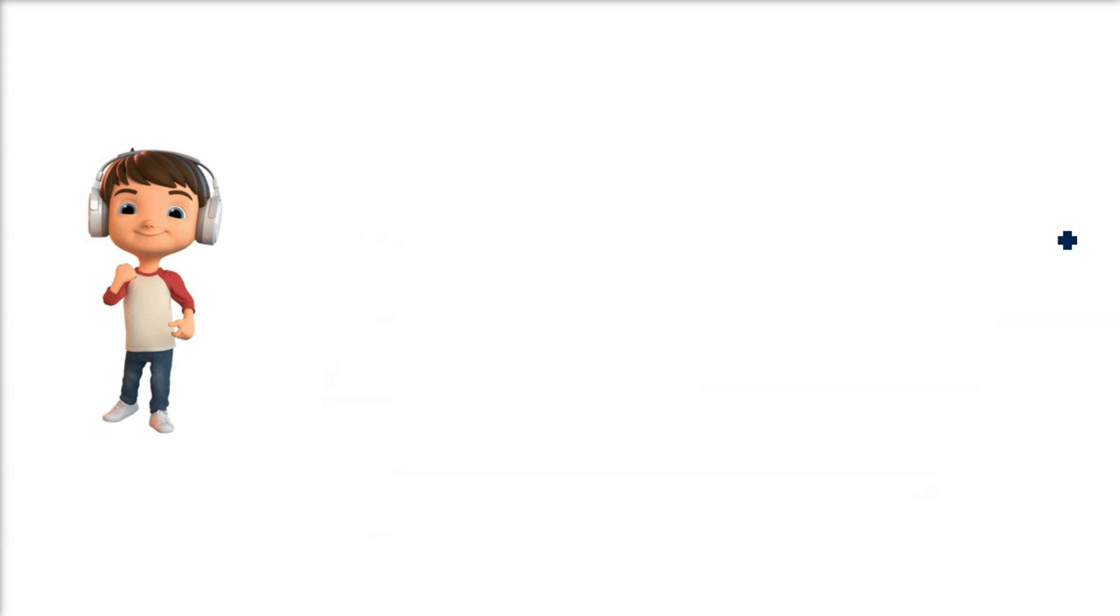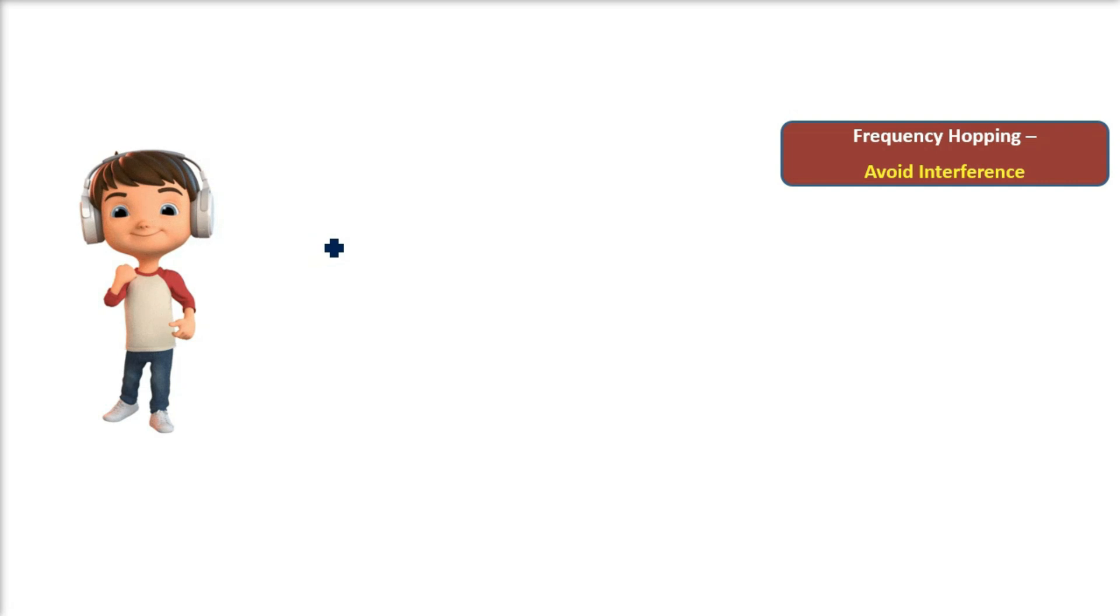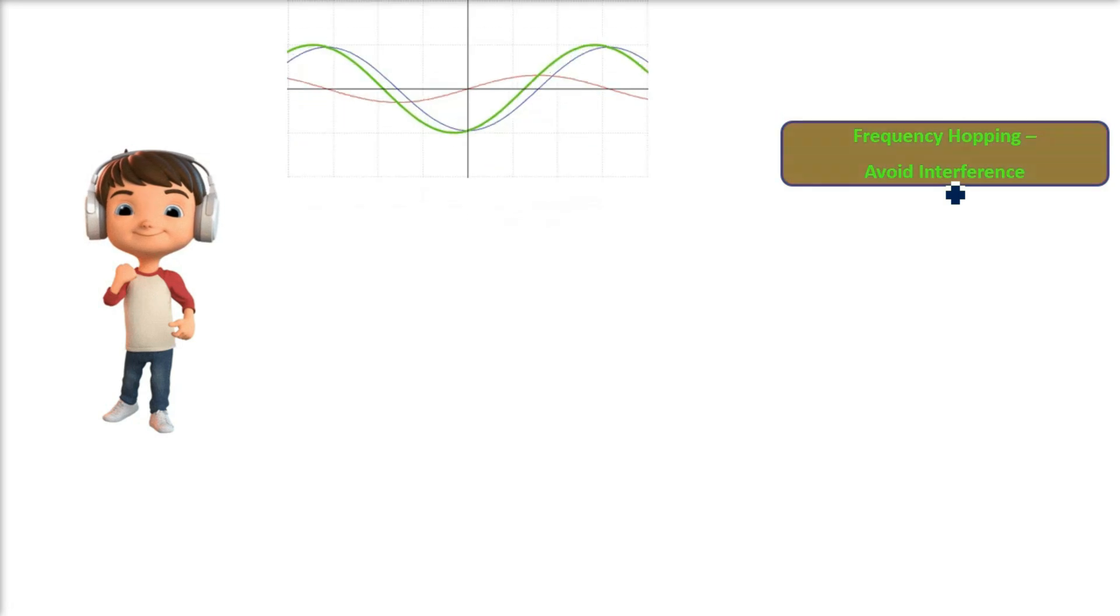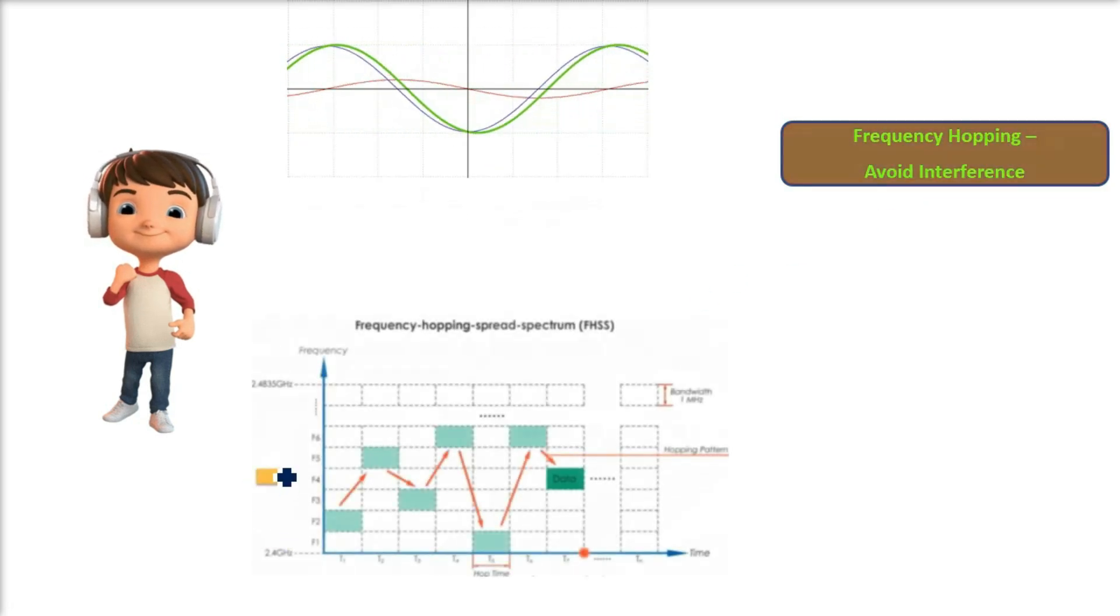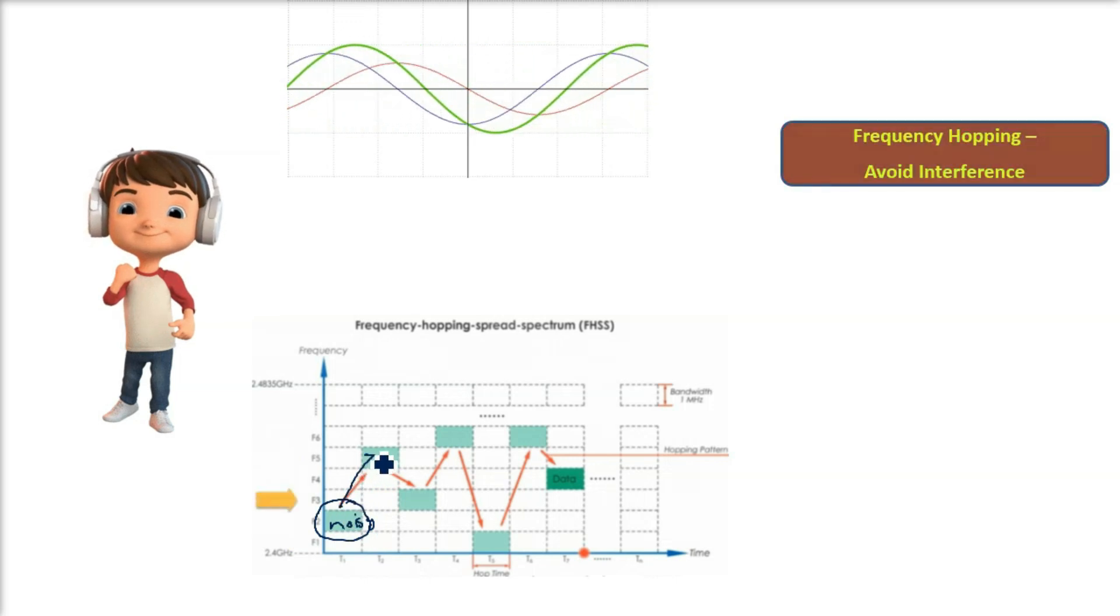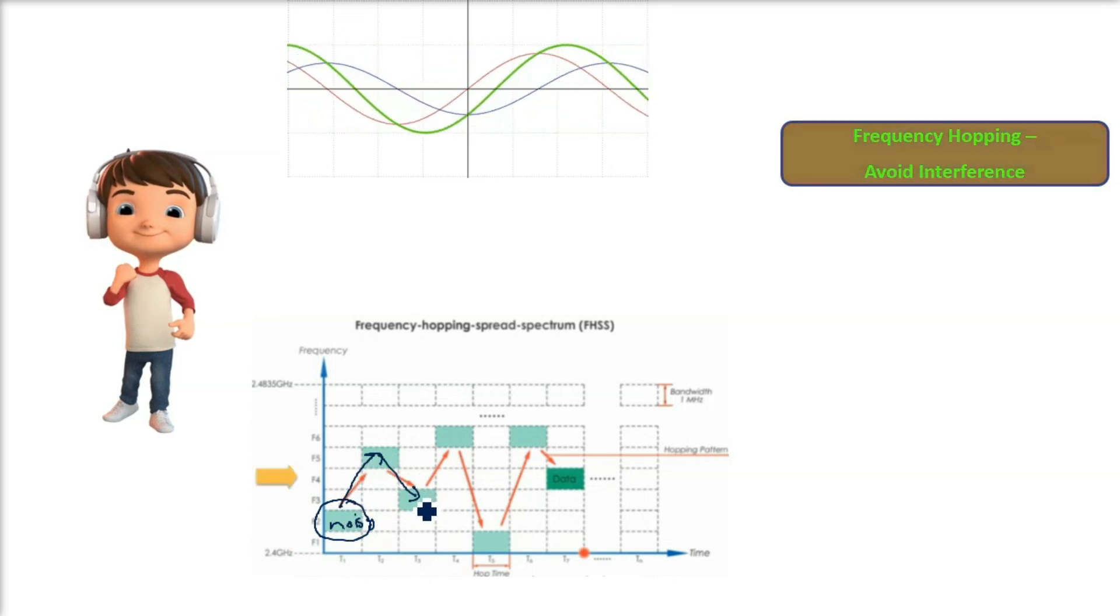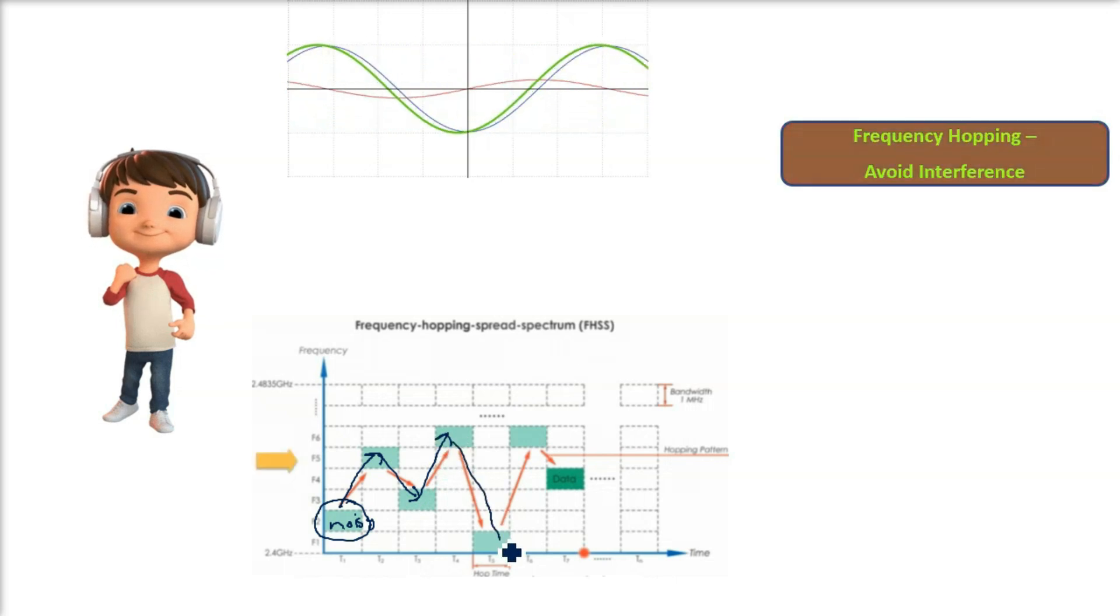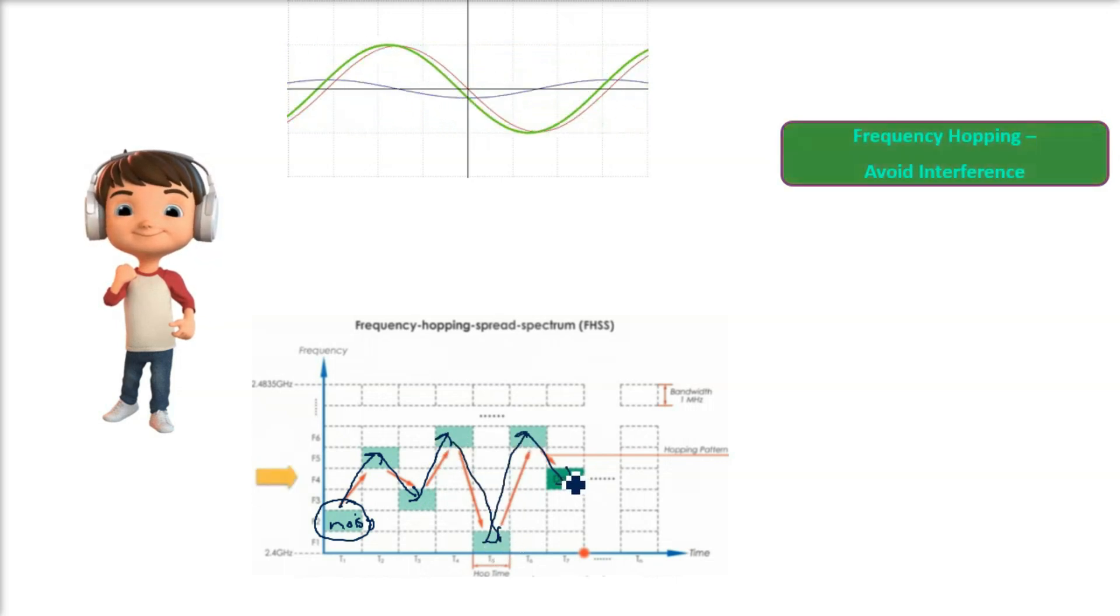So how does frequency hopping help avoid interference? Your Bluetooth headphones and phone are constantly changing the frequency they use for communication. For example, if frequency A is crowded or becomes noisy, they quickly hop to frequency B or to frequency C and so on, avoiding the interference.